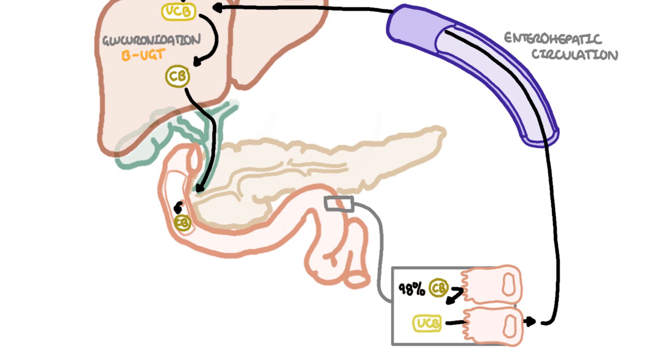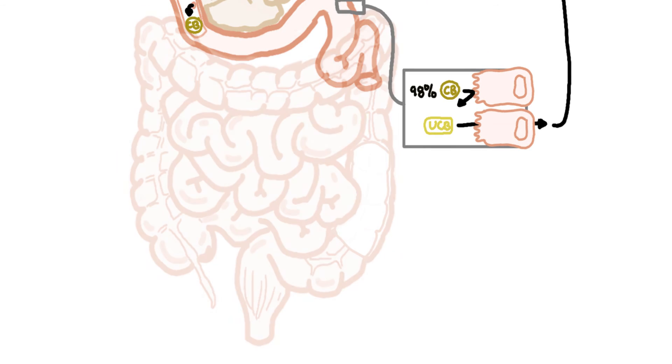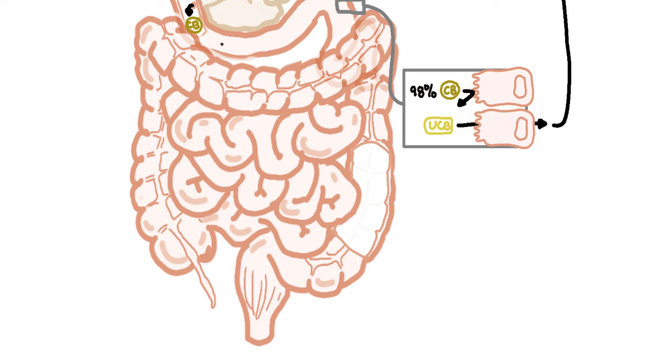Going back to this conjugated bilirubin, it actually continues traveling to the large intestine where it is exposed to so much bacteria. Here the bilirubin is reduced by bacterial enzymes to a series of molecules termed urobilinogens.